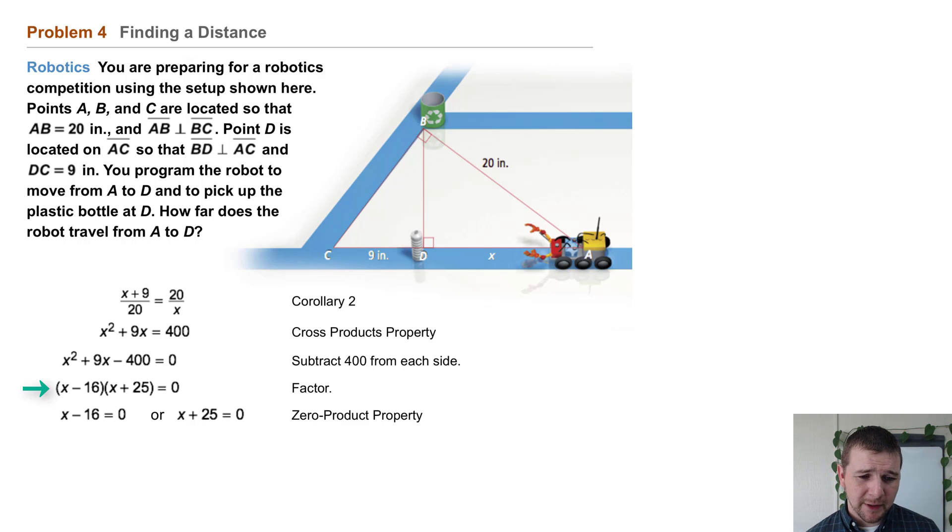Because if the binomial x minus 16 times the binomial x plus 25 equals 0, then at least one of those binomials equals 0. So x minus 16 must equal 0 or x plus 25 must equal 0. This leads us to our two solutions, x equals 16 or x equals negative 25.